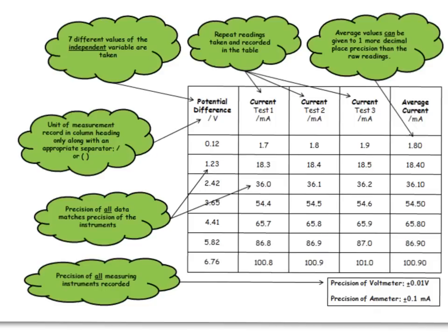Let's look at some key things you need to include. The first thing is this box at the bottom where I've recorded the precision of the measuring instruments I'm using. You need to do this because one of the assessment criteria is that you've recorded all your data to an appropriate precision for the measuring device. The only way an examiner can know you've used the appropriate one is that you've actually recorded it down there correctly.